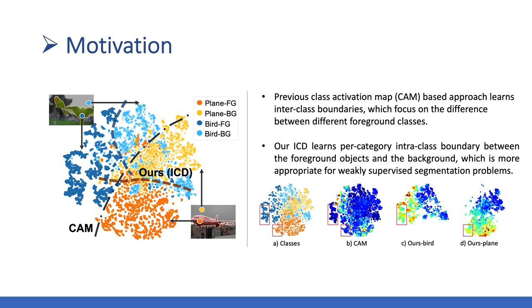We propose that this is because the CAM-based methods only concern the discrimination between different classes. However, to generate masks, we need to separate pixels sharing the same class labels into the foreground and the background — that is, intra-class discrimination.